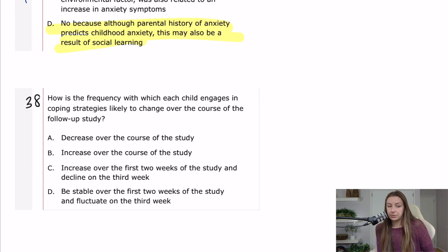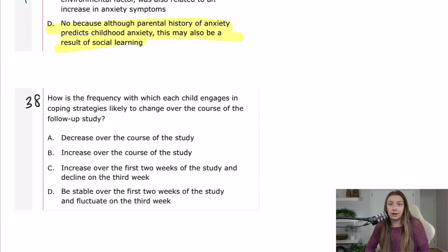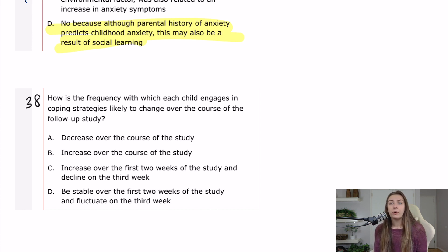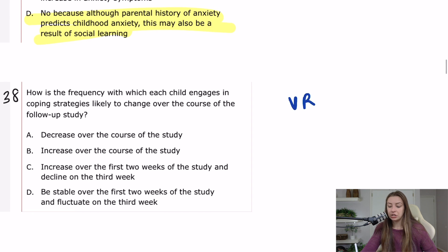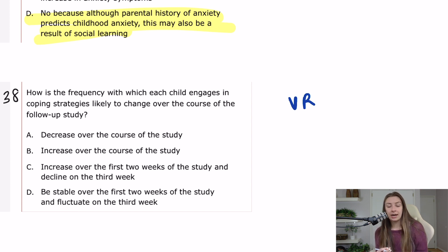Question 38 asks: how is the frequency with which each child engages in coping strategies likely to change over the course of the follow-up study? This is asking how well these reinforcement schedules work in comparison to one another. Variable ratio is the gold standard — it's the best way to reinforce behavior and get the outcome you want from participants.